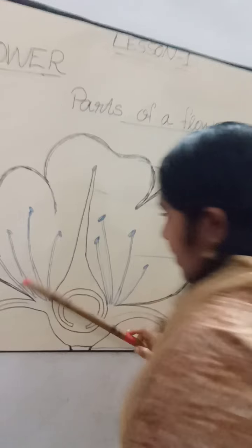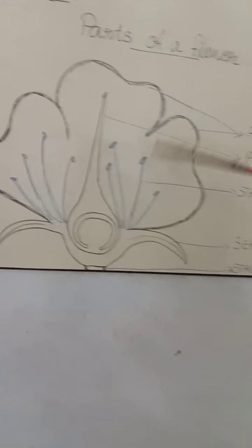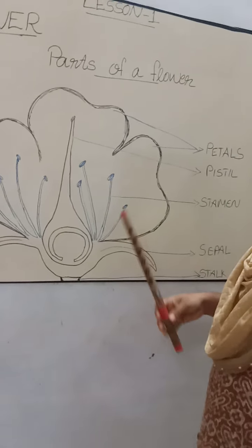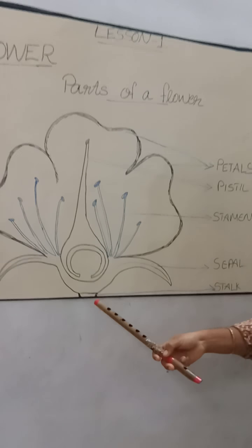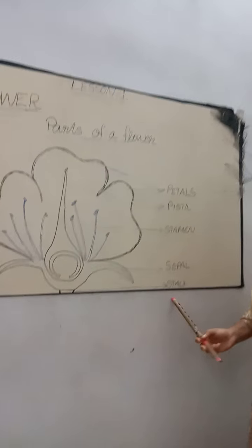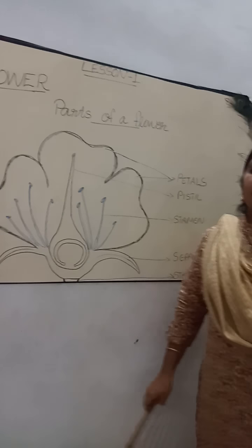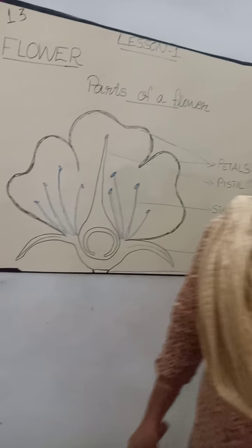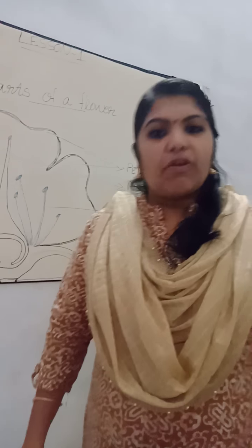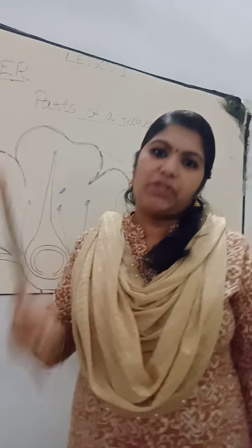So this is the parts of a flower. You can see the first part is stalk. Stalk means the part where the flower is attached to the stem. So the flower is attached to the stem with the help of stalk.